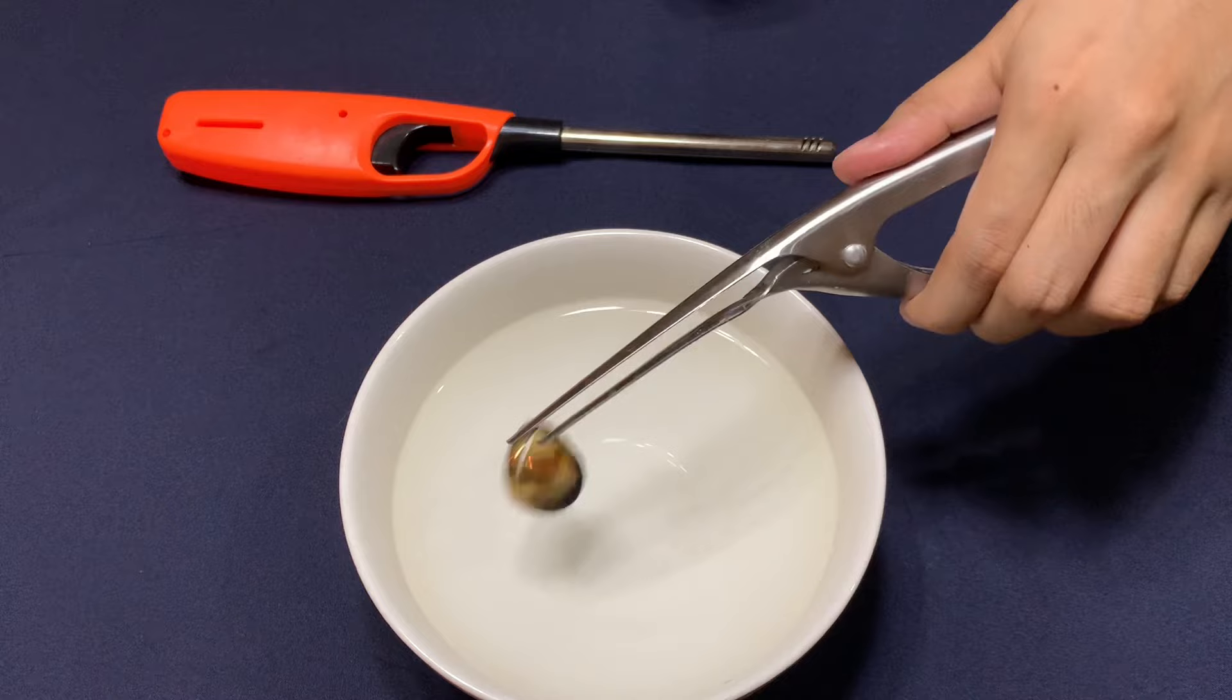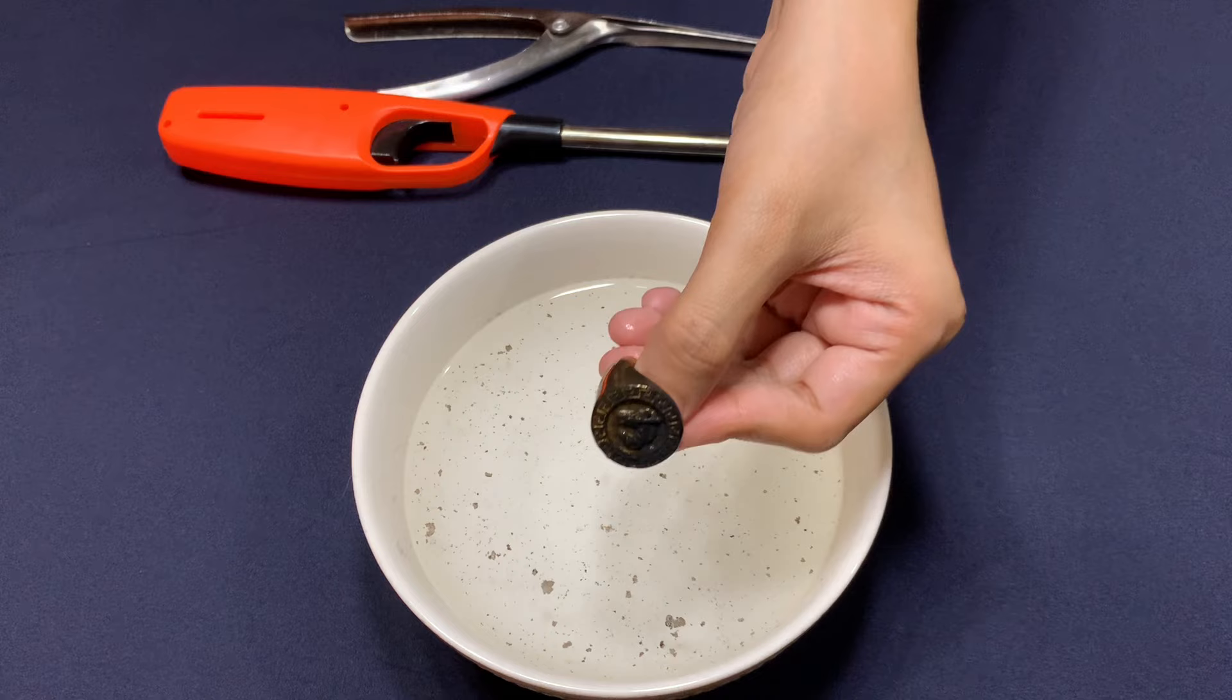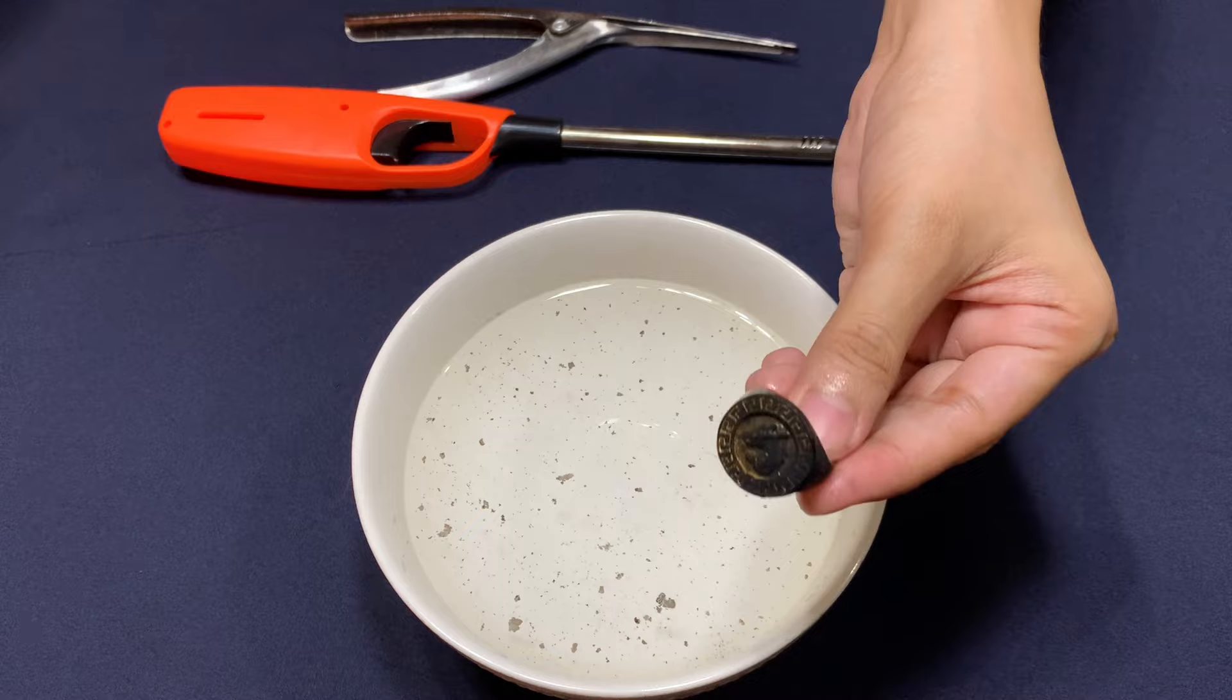Authentic solid gold will look the same without any dark spots. Real solid gold with no plating will not react to the flame. It should maintain its yellow color and appearance after cooling down.